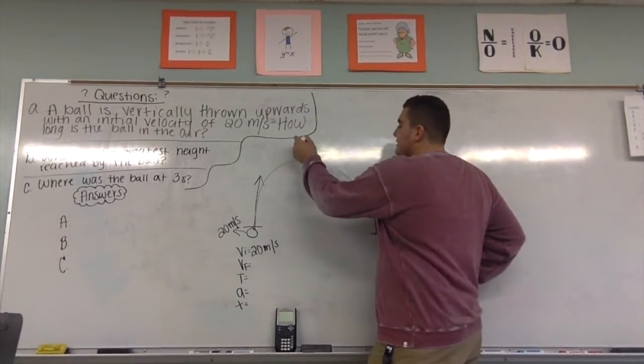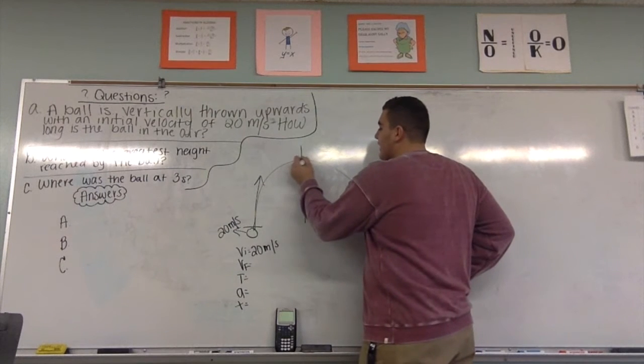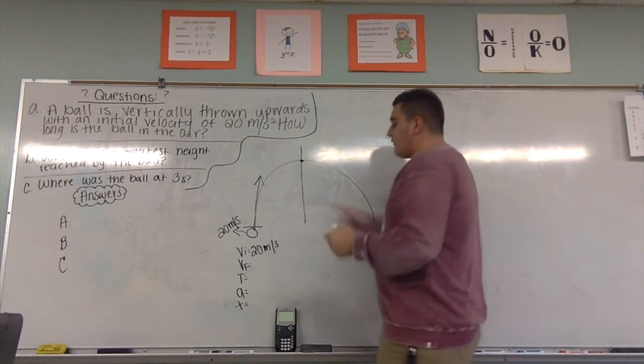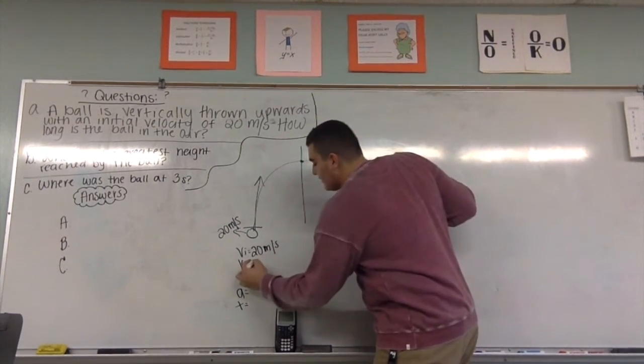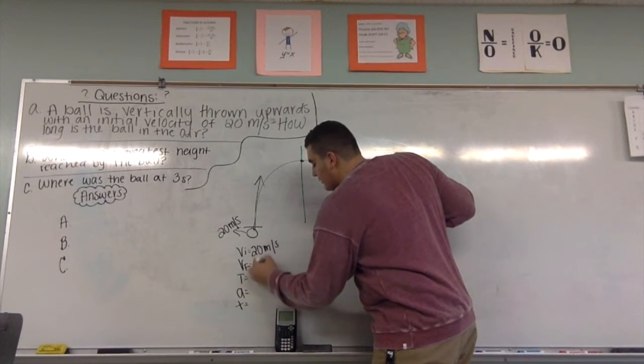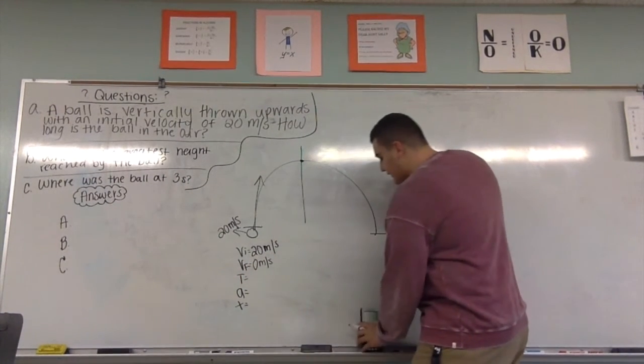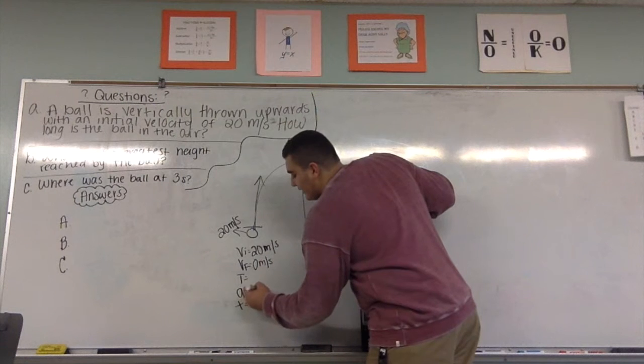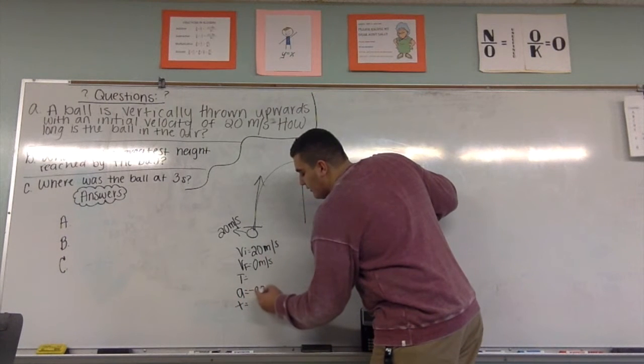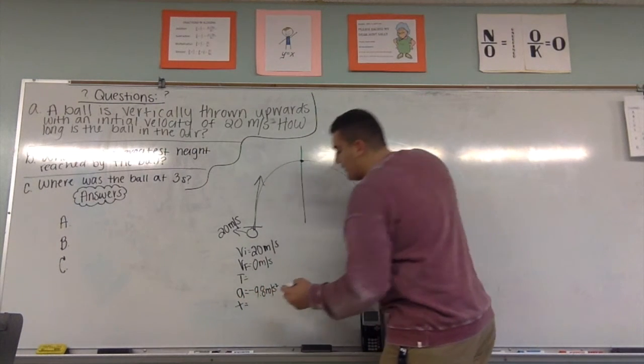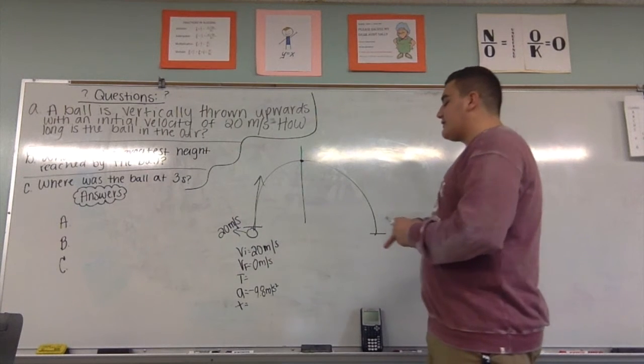Next, we're going to cut this in half, so here is our halfway point. We know that our final velocity here is going to be zero and free fall acceleration is negative 9.8. Now, we have to solve for time and displacement.